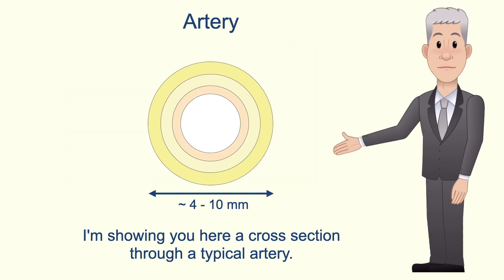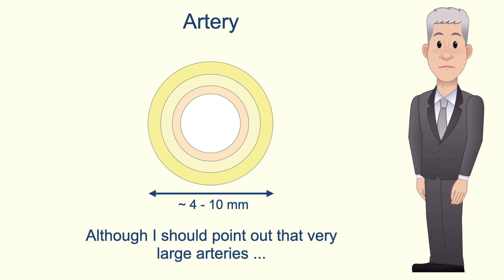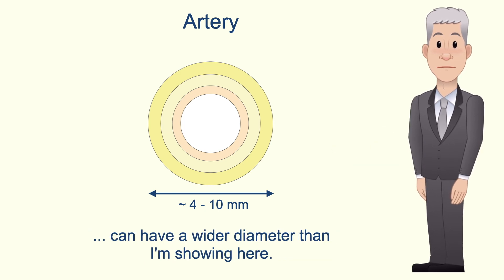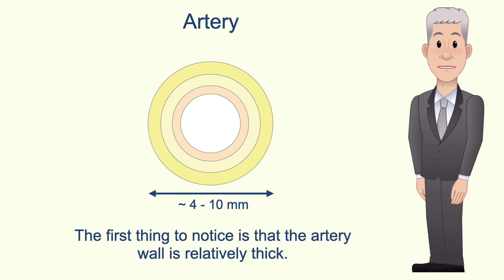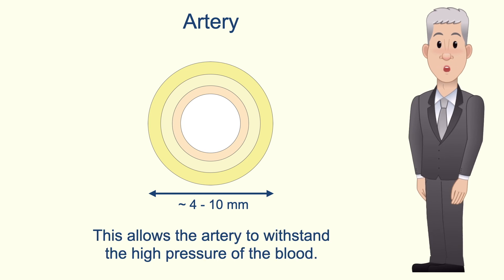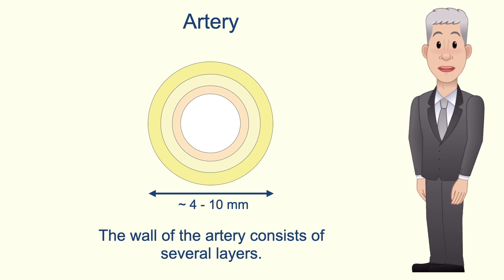Here is a cross section through a typical artery, although very large arteries can have a wider diameter than shown here. The first thing to notice is that the artery wall is relatively thick, which allows the artery to withstand the high pressure of the blood. The wall of the artery consists of several layers.